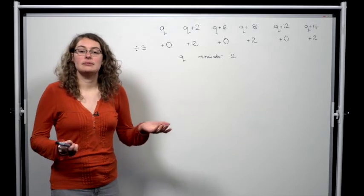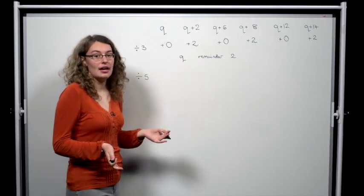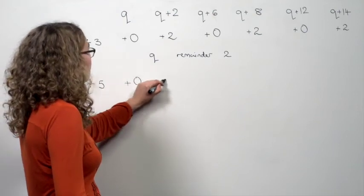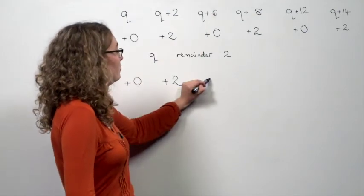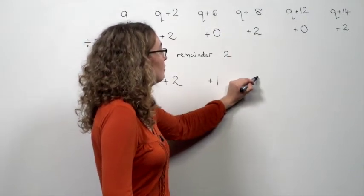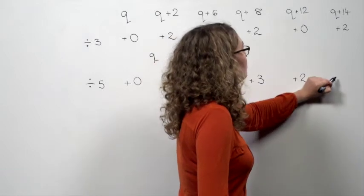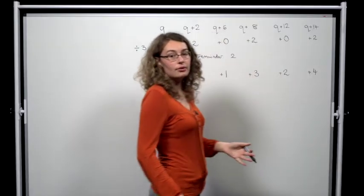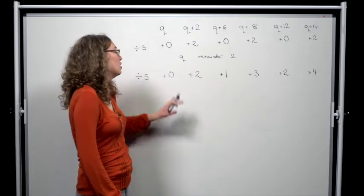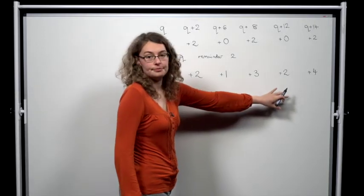If we look at what remainder we get when we divide by 5, we have plus 0, plus 2, 6 will leave remainder plus 1, 8 on division by 5 leaves remainder 3, 12 leaves remainder 2, and when we divide 14 by 5, we get remainder 4. Now, if we look at what we're adding, crucially, this time we have all the possibilities. You can add 0, 1, 2, 3, or 4.